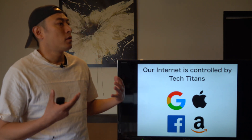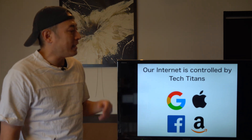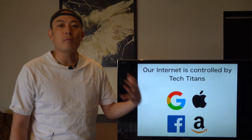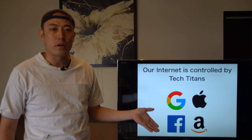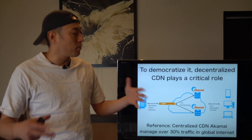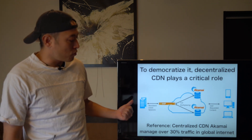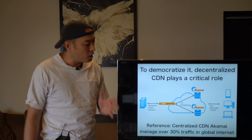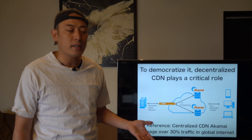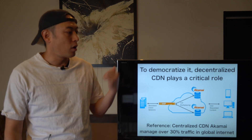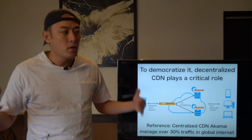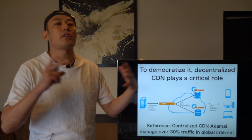To understand the potential of the decentralized CDN market, the first thing we should understand is that the current internet is controlled by tech titans such as Google, Amazon, Apple, and Facebook. The blockchain industry tries to democratize all internet infrastructure currently controlled by these players. One of the critical technologies we have to develop to execute this democratization is the decentralized CDN. The leading CDN player on a global basis is Akamai, which processes over 30% of internet traffic — without Akamai, the internet cannot exist. NKN is one of the cutting-edge players to democratize that infrastructure.